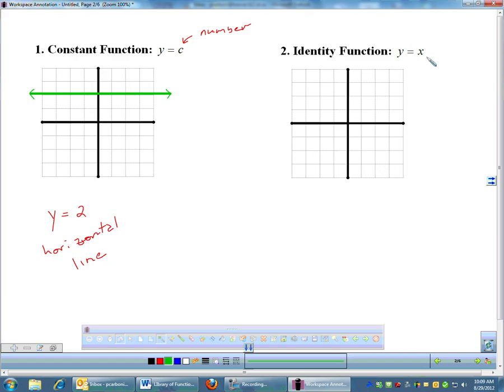The identity function, y equals x, you can look at that as a slope-intercept form where it's y equals 1x plus 0, a slope of 1. It goes through the origin. So I will hit the origin, and then my slope is 1, up 1, over 1. And there's the graph of the identity function. It is called the identity function because x and y have the same identity throughout. When x is 2, y is 2. So x and y are always equal to each other.